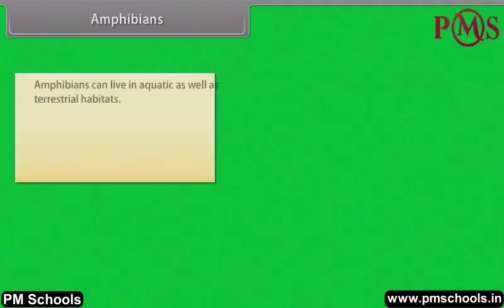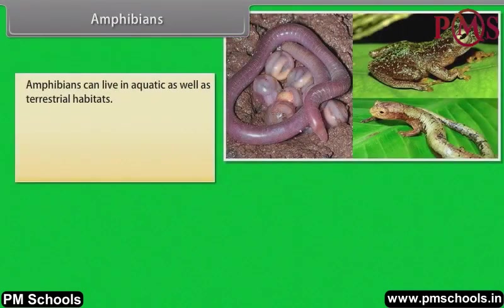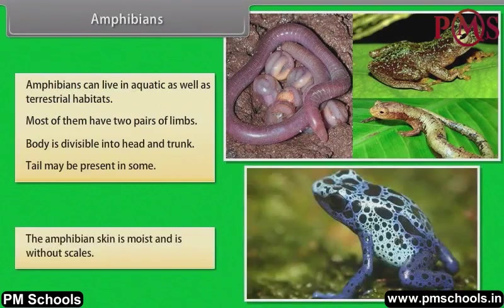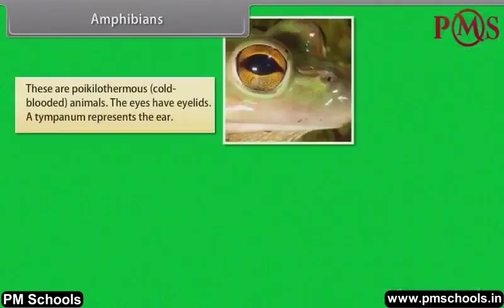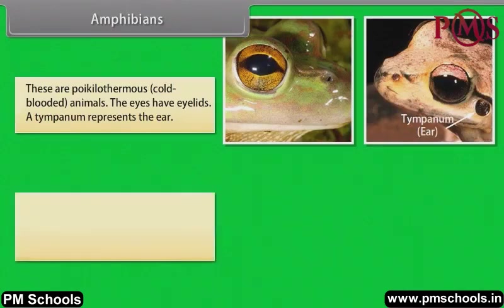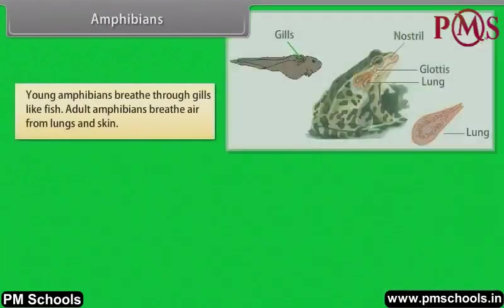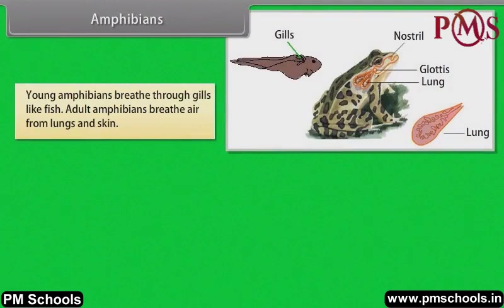Amphibians. Amphibians can live in aquatic as well as terrestrial habitats. Most of them have two pairs of limbs. Body is divisible into head and trunk. Tail may be present in some. The amphibian skin is moist and is without scales. These are poikilothermus, that is, cold-blooded animals. The eyes have eyelids. A tympanum represents the ear. Alimentary canal, urinary and reproductive tracts open into a common chamber called cloaca, which opens to the exterior.